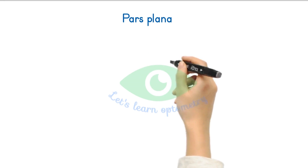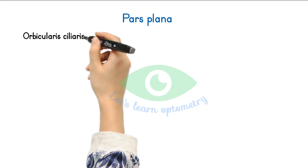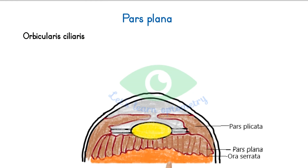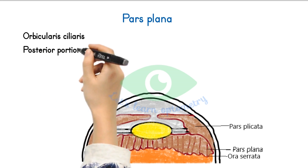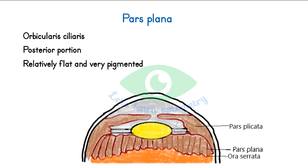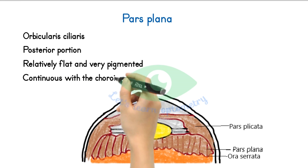Pars plana, otherwise called the orbicularis ciliaris. This is the sagittal view of the eyeball showing the pars plana. Pars plana is the posterior portion of the ciliary body. It is relatively flat and very pigmented, and is continuous with the choroid at the ora serrata.